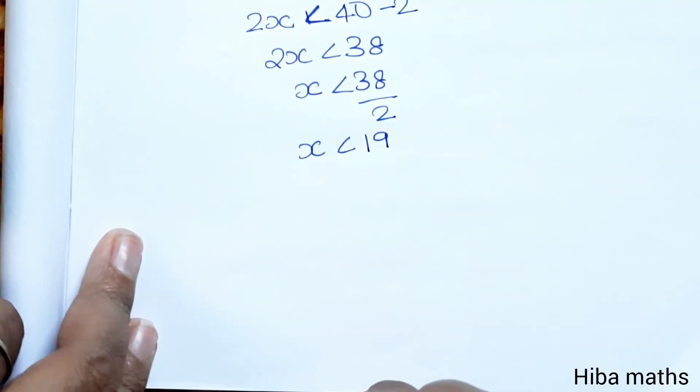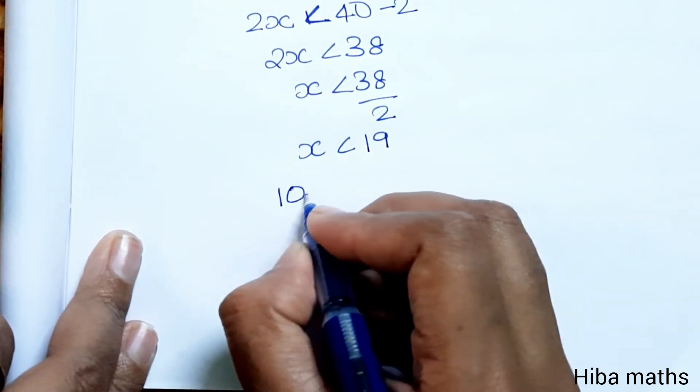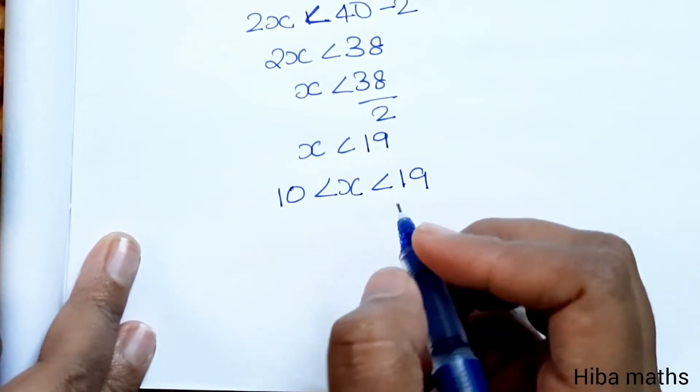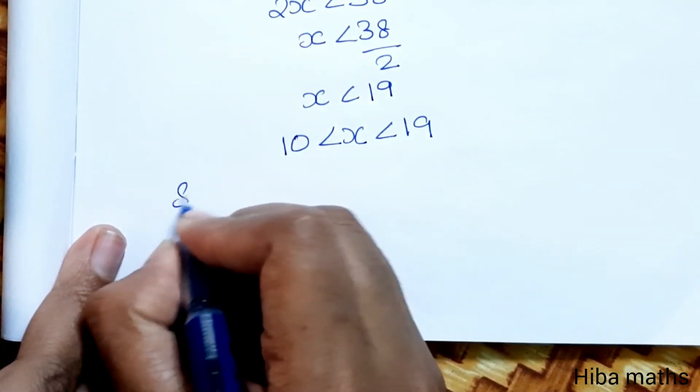For the sum condition, x plus x plus 2 is less than 40, which gives 2x less than 38, so x is less than 19.